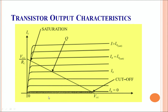Looking at this graph carefully, the collector current rises sharply with an increase in the collector-emitter voltage and soon attains a saturated value. In the saturated region, the collector current no longer changes with a change in the collector-emitter voltage, and IC shows a saturation value.